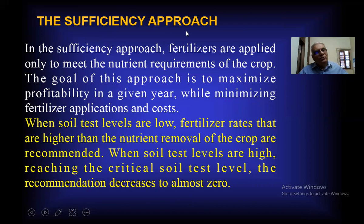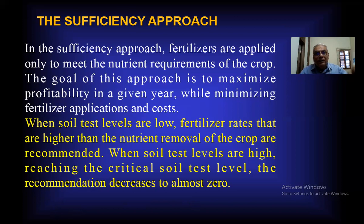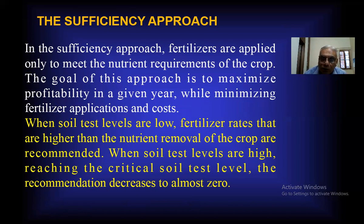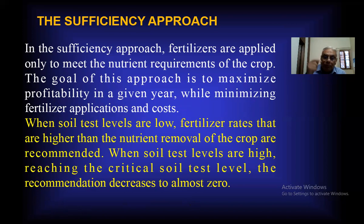The second approach is the sufficiency approach. In the sufficiency approach, fertilizer is applied only to meet the nutrient requirement of the crop. If you grow only corn or maize, you apply only that much fertilizer — you are not concerned about future or next year fertility. The goal of this approach is to maximize profitability in a given year while minimizing fertilizer application and cost, since fertilizer costs are increasing. We apply only the required fertilizer for the current crop.